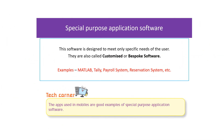Special purpose application software is designed to meet only the specific needs of the user. They are also called customized or bespoke software. Examples include MATLAB, Tally, Payroll System, Reservation System, etc. An important fact: the apps used on mobiles are good examples of special purpose application software.